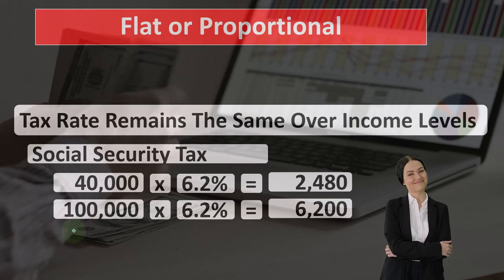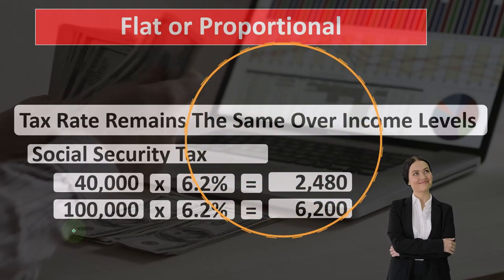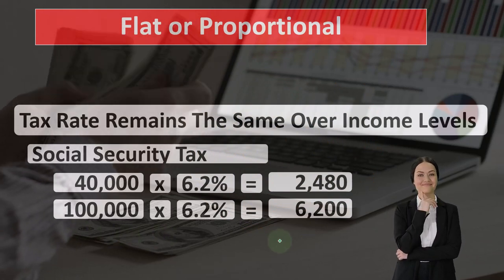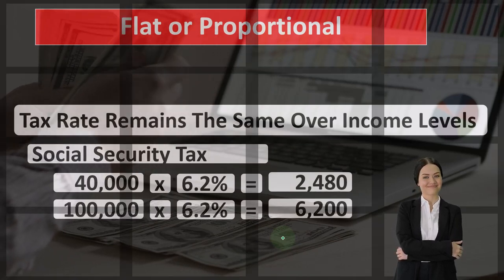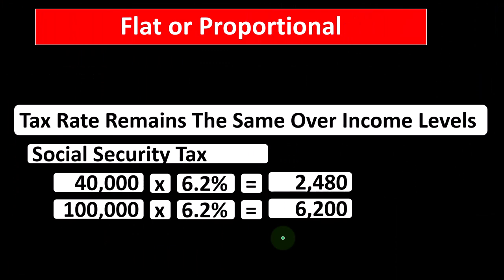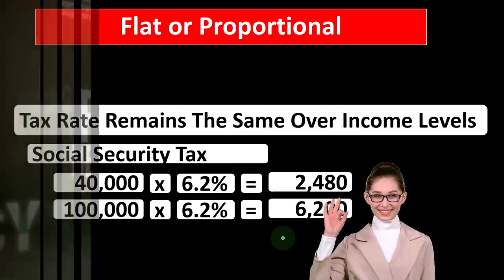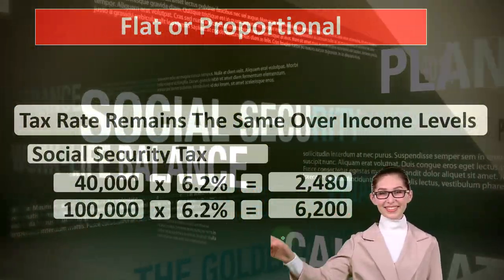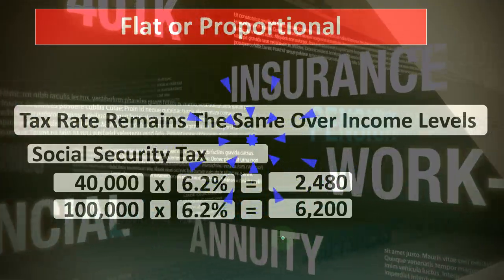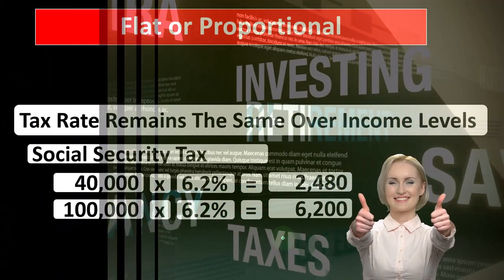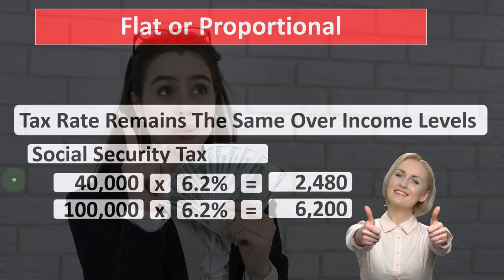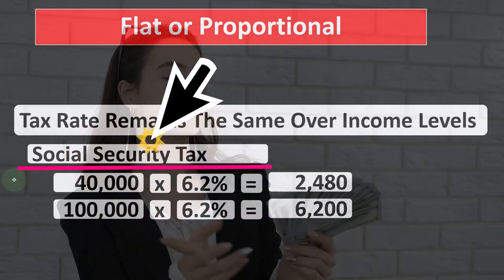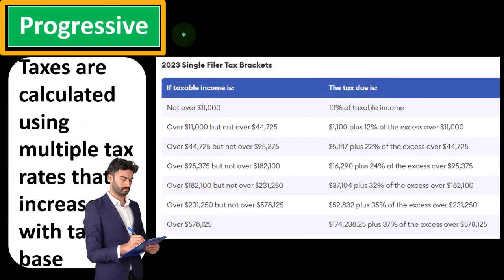With Social Security taxation, there's a cap: if you earn more than a certain level — which goes up every year with inflation — you don't pay any more Social Security tax beyond that point. This makes sense because benefits in retirement are based on how much you paid in, so there's a tapering: people who are well off don't get proportionally more benefits above a threshold, so they also stop contributing above that income level.